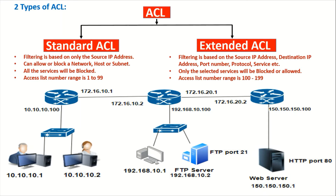Standard ACL is common to all services — it is not specific to a particular service. In this scenario, we have two routers with a LAN segment under each router. Standard ACL works based on source IP address. We have two users with IP addresses 10.10.10.1 and 10.10.10.2, and an FTP server with IP address 192.168.10.2.